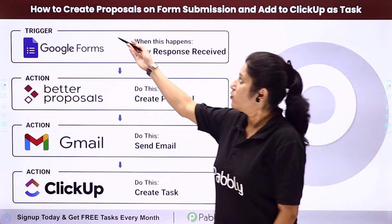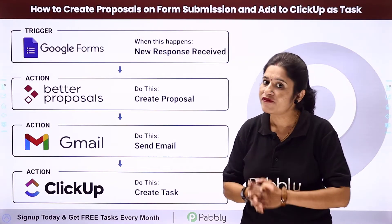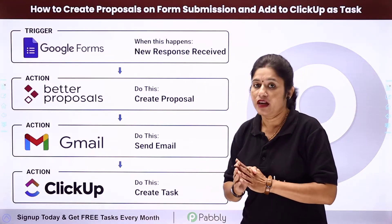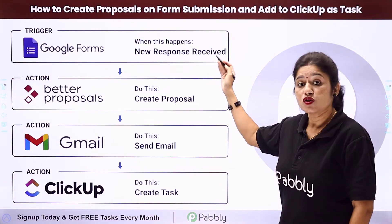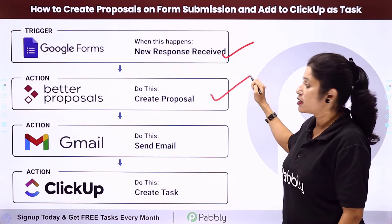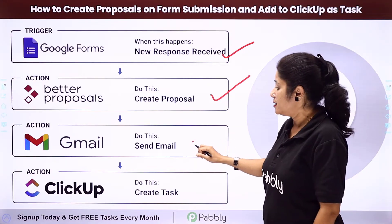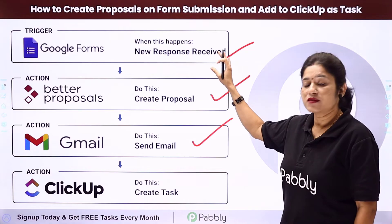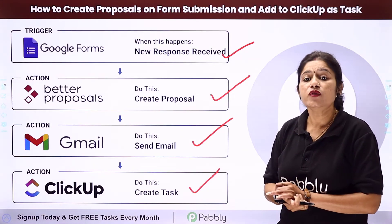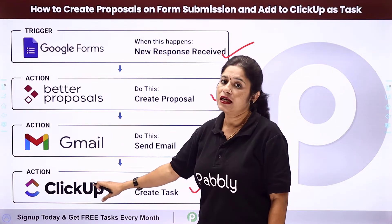In this video we are going to learn how you can create proposals on form submissions and add to ClickUp as a task. The idea is that you have created a form using your Google Forms account and shared it with your clients. Whenever a client fills the form, automatically using the details of the form submission, a proposal should get created in your Better Proposals account and then the same proposal should be sent via email to the client.